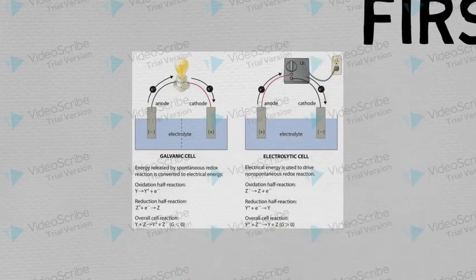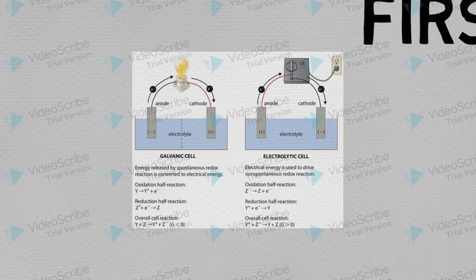In Galvanic cell, energy released by spontaneous redox reaction is converted to electrical energy, but in Electrolytic cell, electrical energy is used to drive non-spontaneous redox reactions.